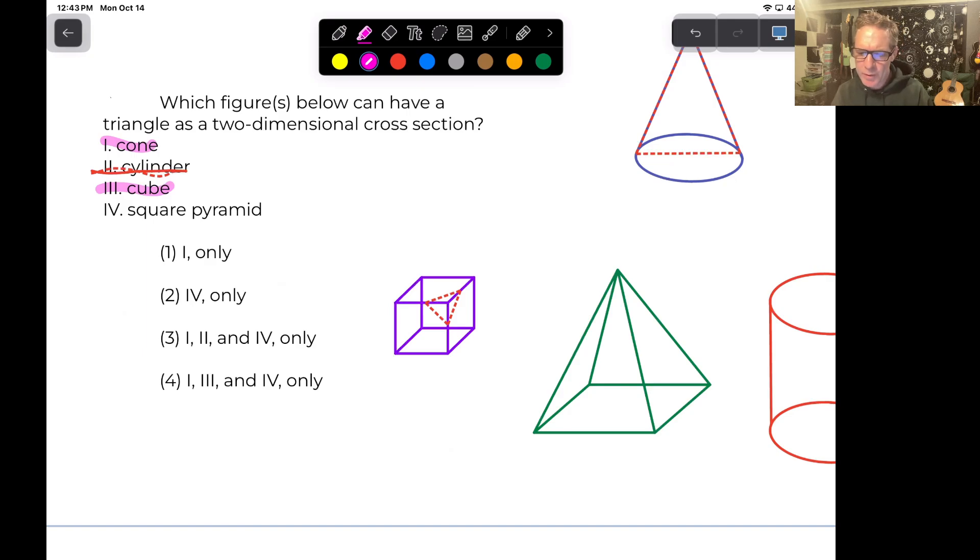And then the square pyramid, of course, a square pyramid is going to work because it's got these triangular faces. So if we just slice off kind of perpendicular to the base or even a little slanted to the base, you could create this triangular image right here. If we just slice off one of those faces.